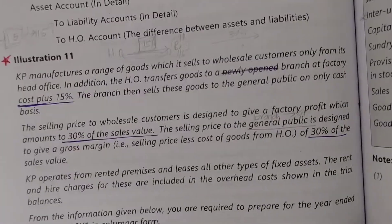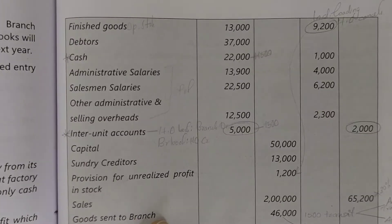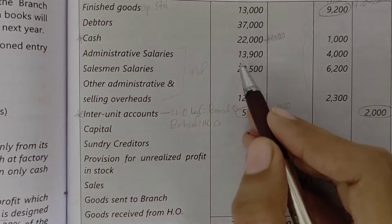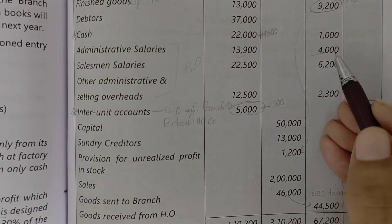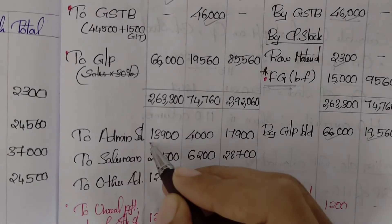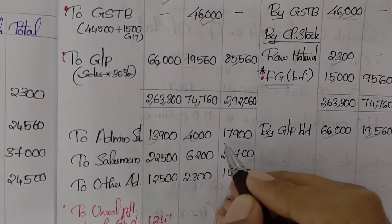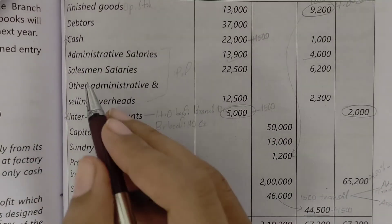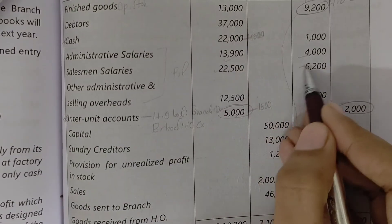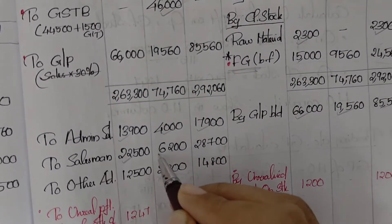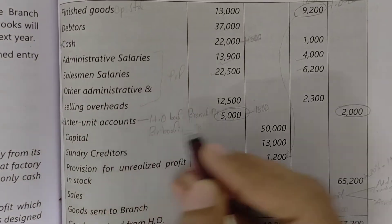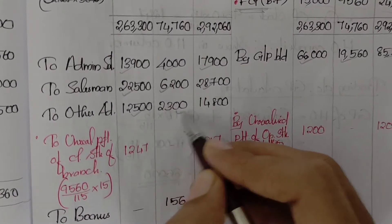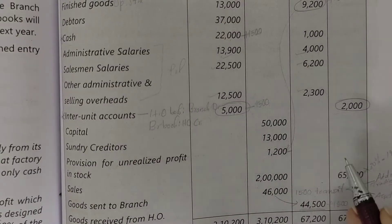Then in the P&L account, gross profit is brought down. Expenses: administrative salaries — head office 4000, branch 3900, total 7900. Salesman salaries — head office 22500, branch 6200, total 28700. Other administrative and selling overhead — head office 12500, branch 2300, total 14800.